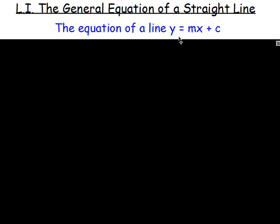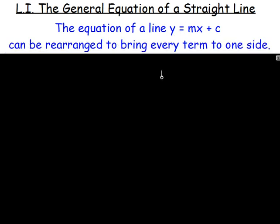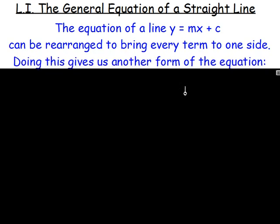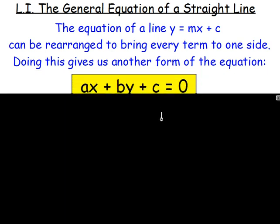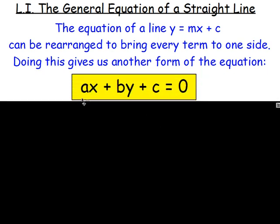However, you can rearrange this equation. You could move the mx term to the other side, you could move the c to the other side, and be left with zero on the right. If you do rearrange it, then you will get just another form of the equation — it's just another way of writing it. And this formula here, ax plus by plus c equals zero, is still just the general equation of a straight line.